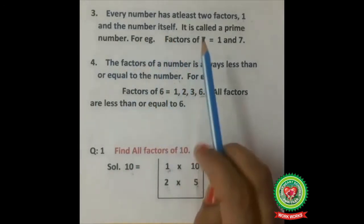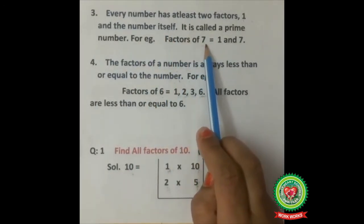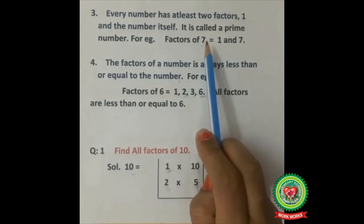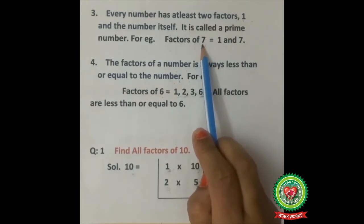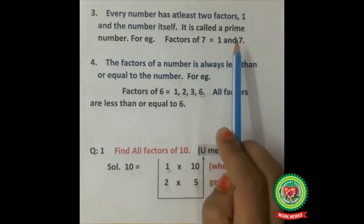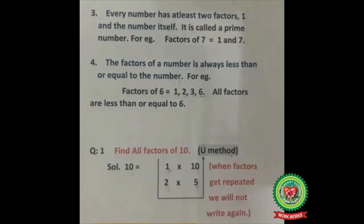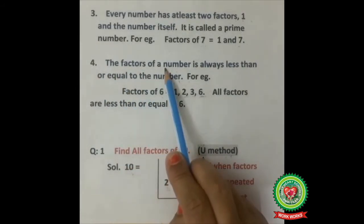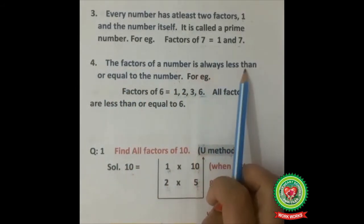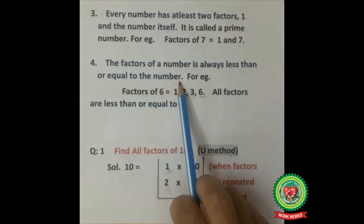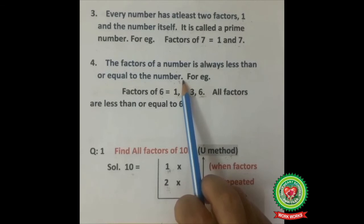For example, the factors of 7: since 7 is a prime number, its factors are 1 and 7. Fourth point: the factors of a number are always less than or equal to the number — a factor should not be bigger than the given number.